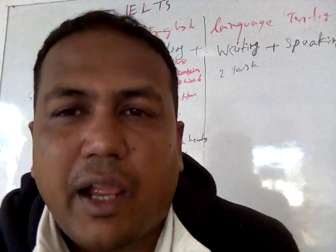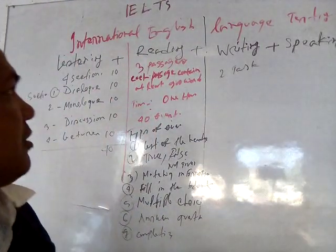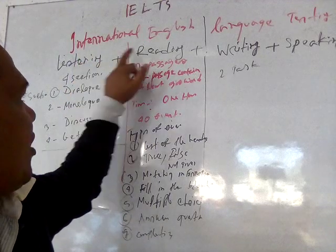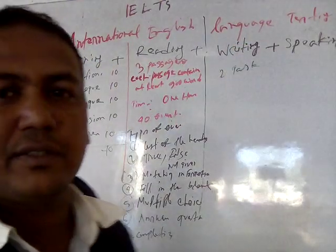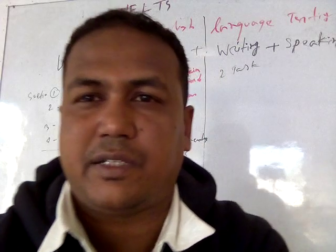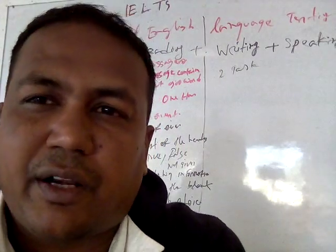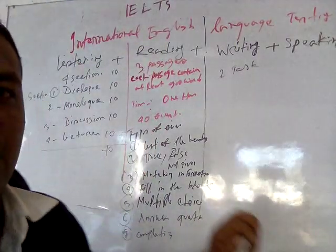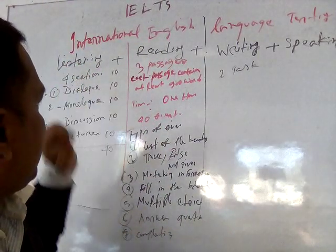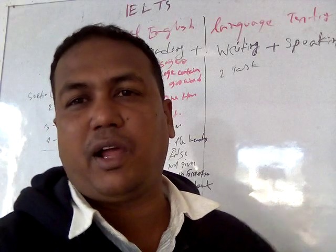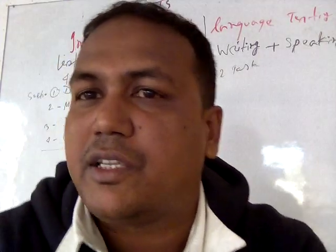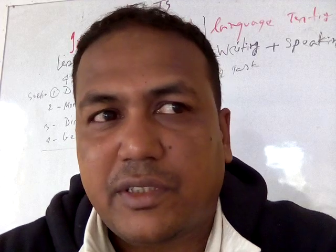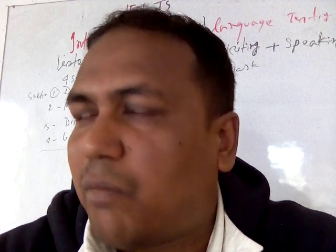In IELTS there are four skills: reading, listening, writing, and speaking. We are going to talk about the listening and reading parts. In the listening part there are four sections. Section 1 is about dialogues — you will hear and listen to dialogues and answer 10 questions. Section 2 is a monologue — you listen and answer 10 questions.